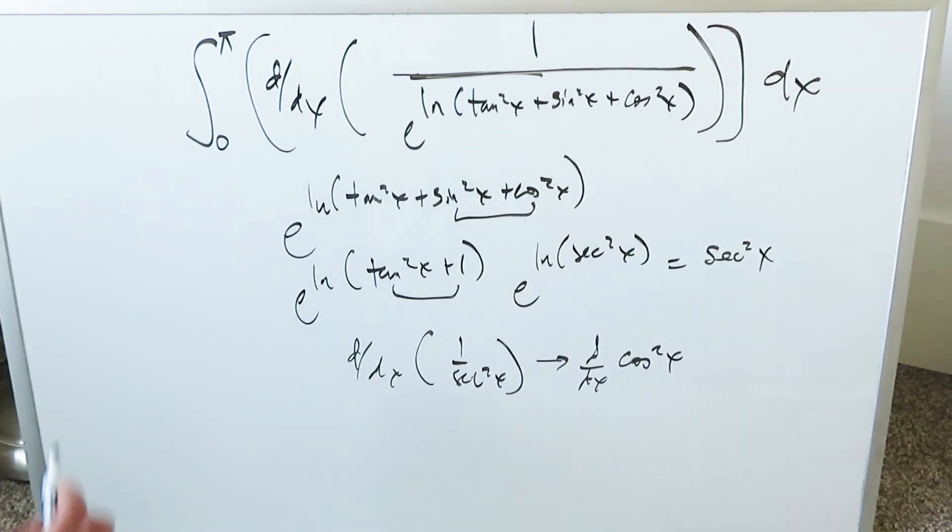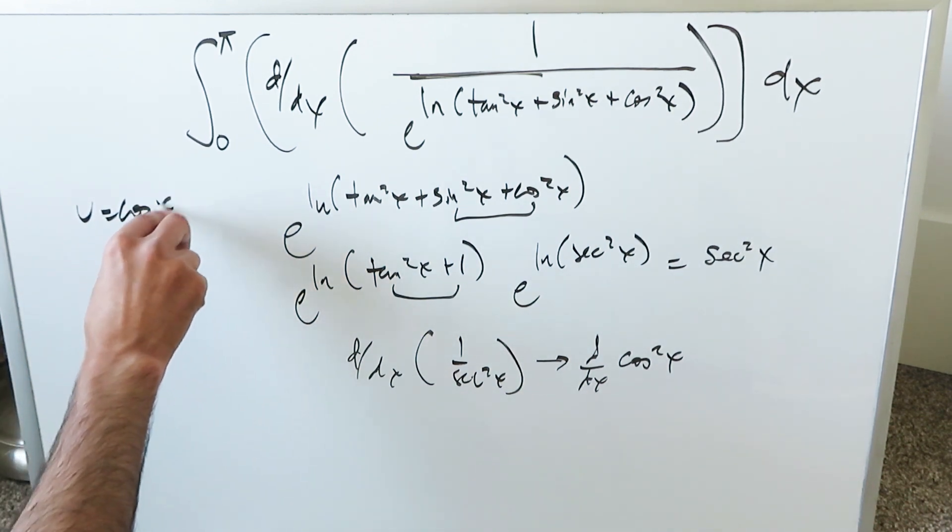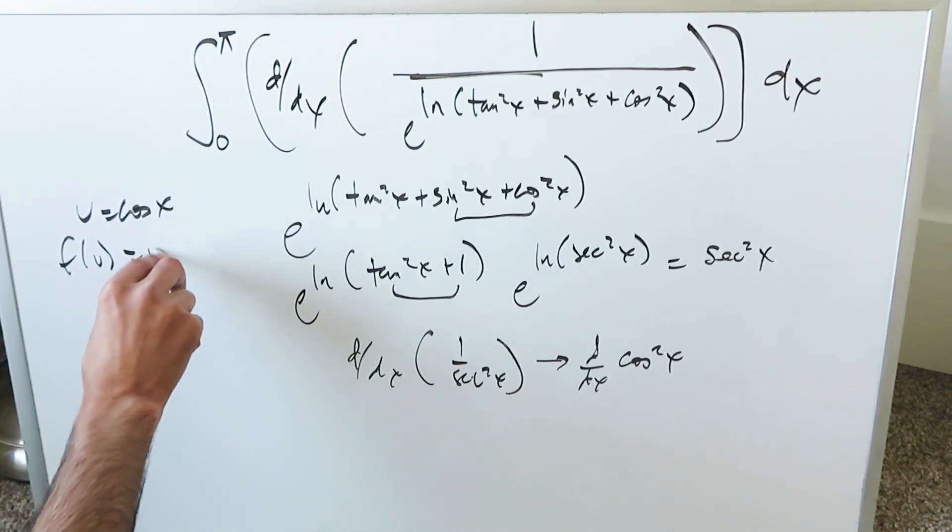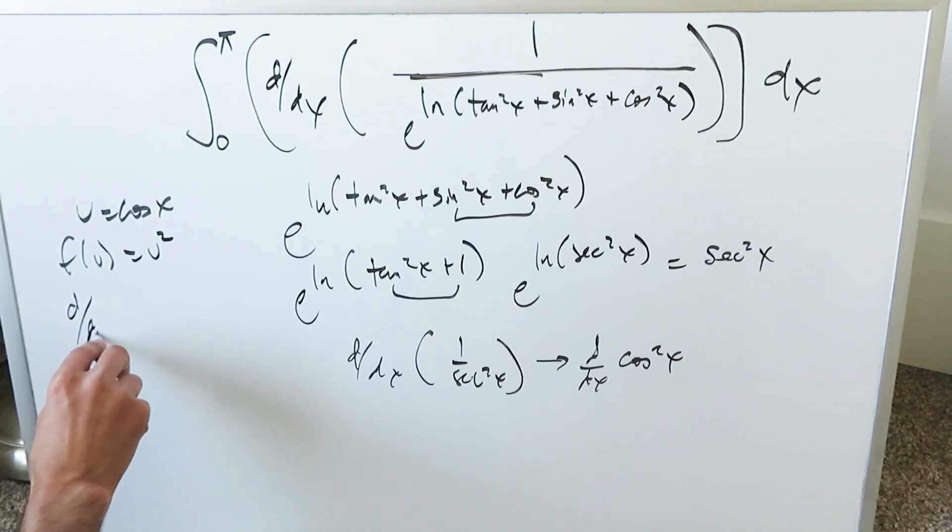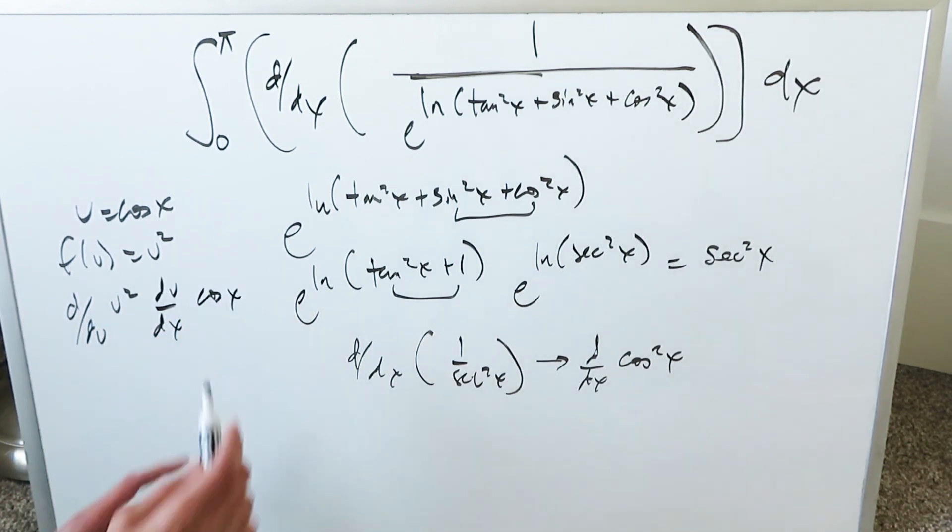You have to do the chain rule. If u is equal to cosine x, function with regards to u is equal to u square. d over du u square, du over dx cosine x. Do all of this. You'll have 2u minus sine x. Bring in the u substitution. Your end result derivative is minus 2 sine x cosine x.